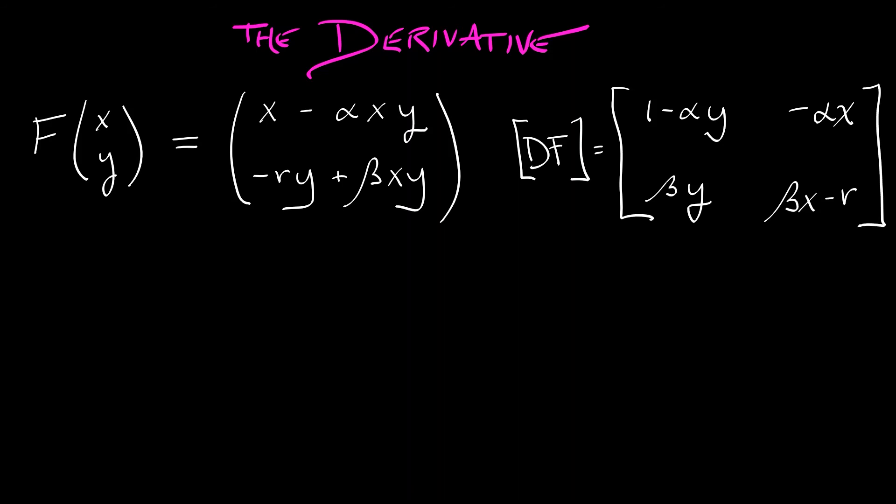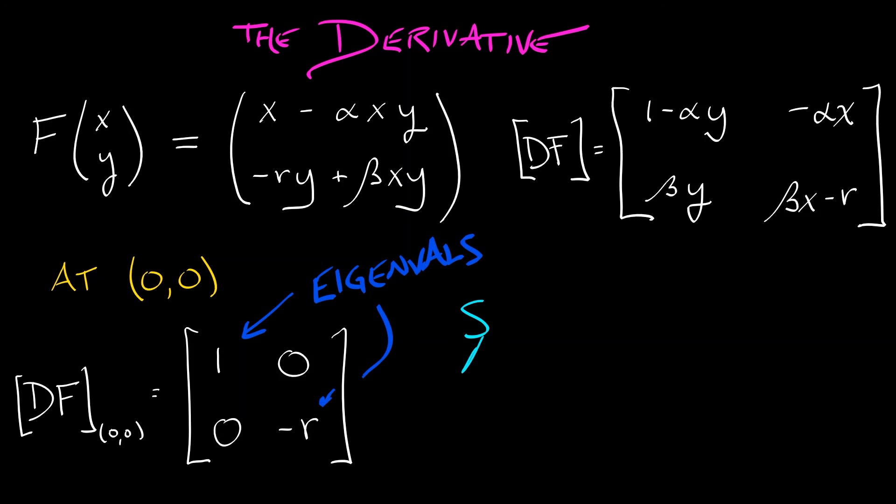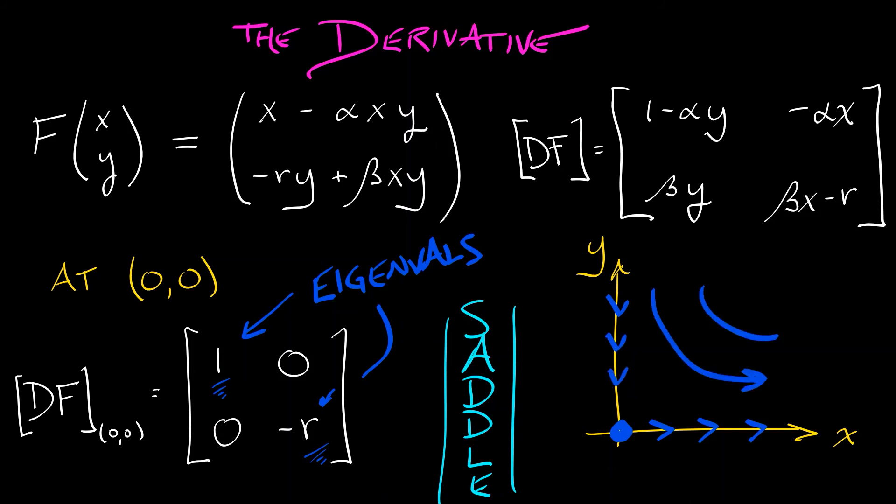Let's begin with the equilibrium at the origin. Here we get the diagonal matrix [1, 0; 0, -r]. We can see the eigenvalues are 1 and -r. Since r is positive, this is a saddle. The eigenvectors are the x and y axes. This is an uncoupled system - you're growing along the x-axis and decaying along the y-axis. This is what the local dynamics near the origin look like.